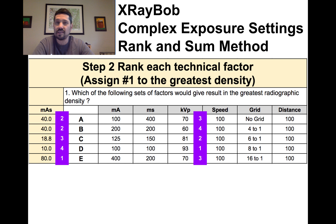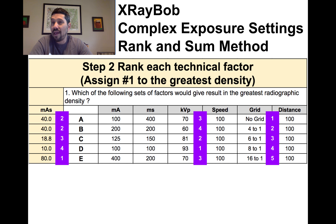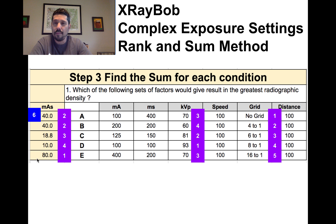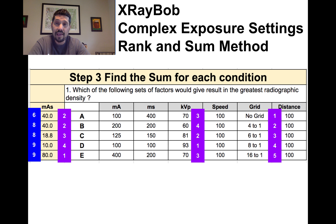Example one using the Rank and Sum method. The question asks: which of the following sets of factors would result in the greatest radiographic density, or the greatest exposure to the IR? Step one is to calculate the mAs — take 100 mA times 400 milliseconds, divide by 1000 to convert to mAs. Step two is to go through each factor: the kVp factor and the grid factor are the two that vary in this example.